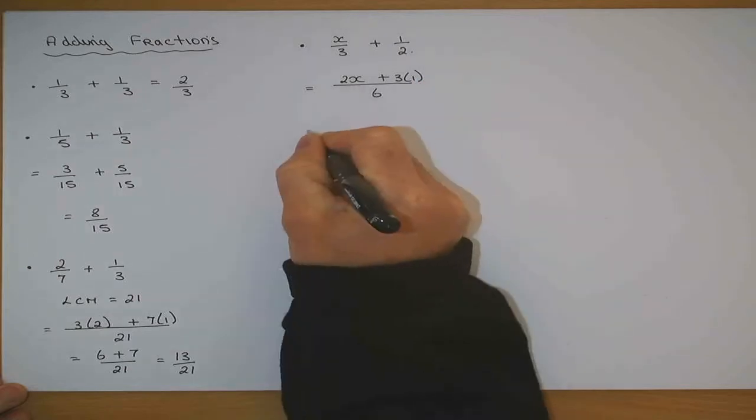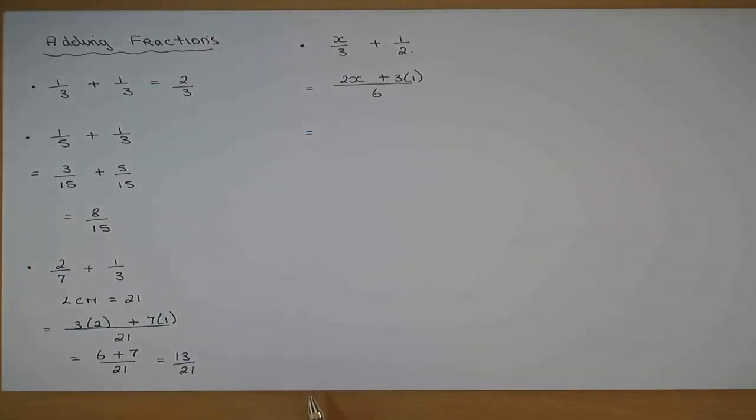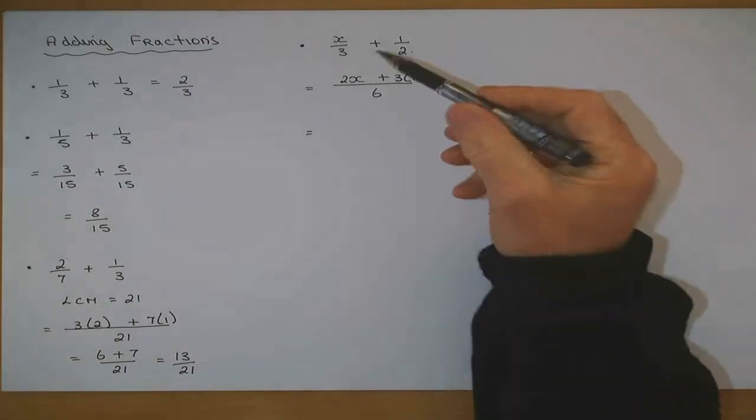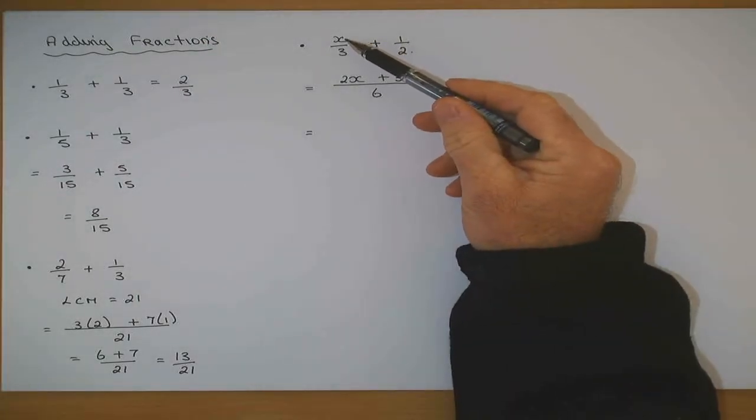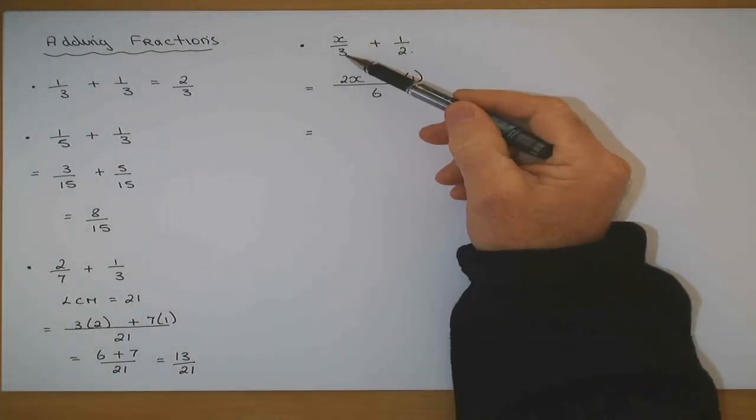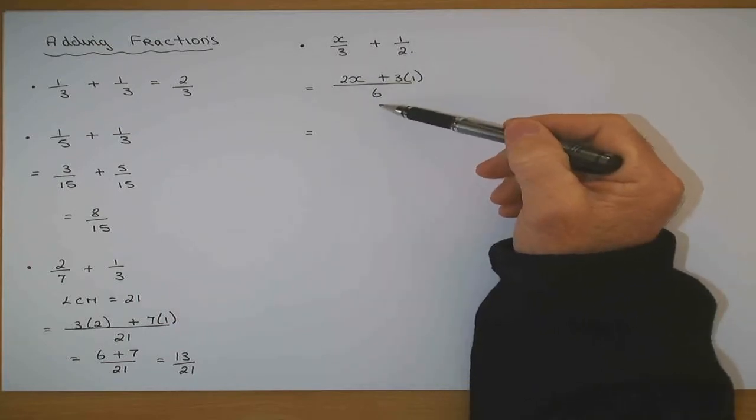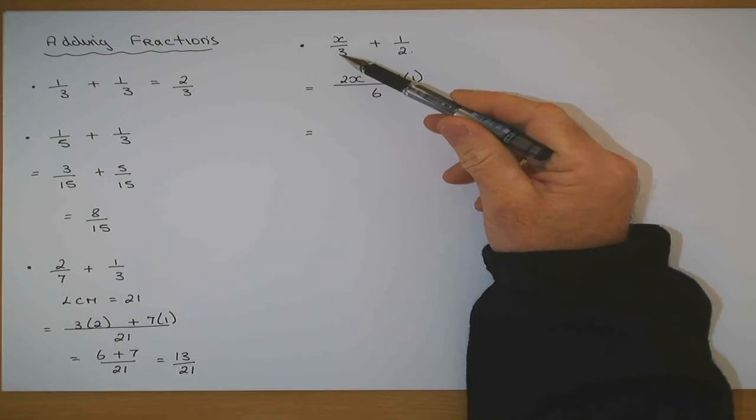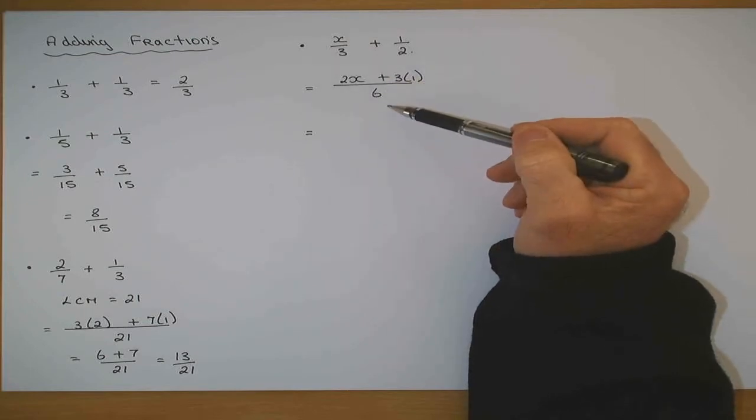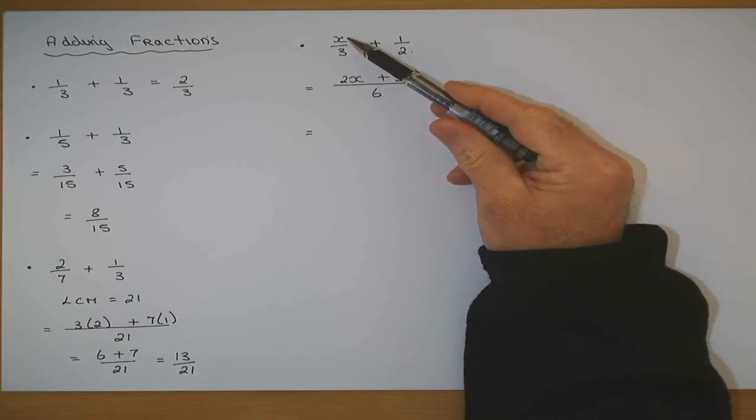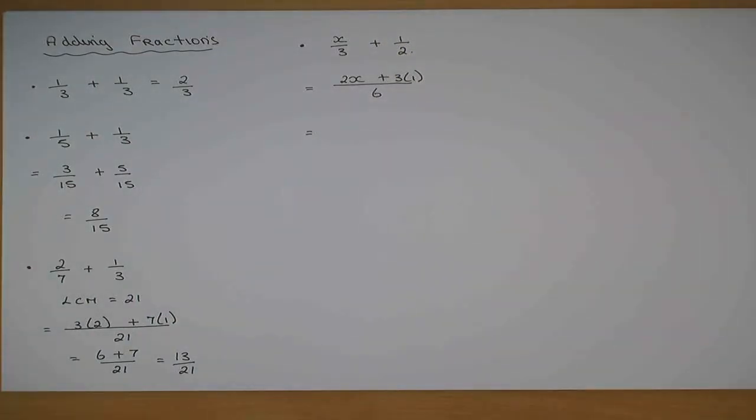Three goes into six twice, so I have 2 times the X and 2 goes into 6, I have 3 times the 1. But I want to explain that perfectly. Whatever number X was, was over 3. I'm now putting it over 6, so I have made the bottom twice as big. What must I do with the top to keep the same fraction?